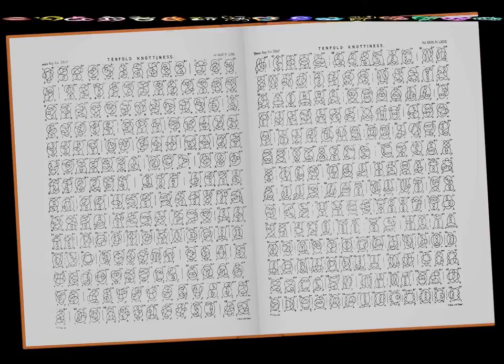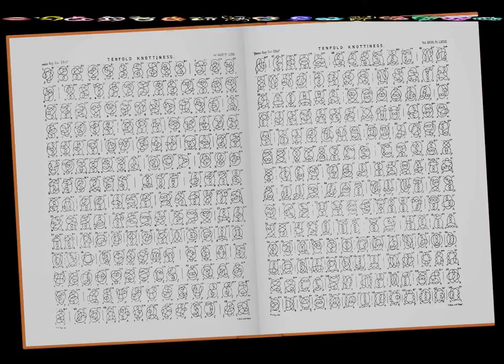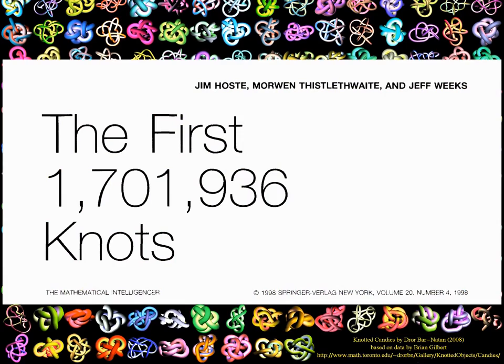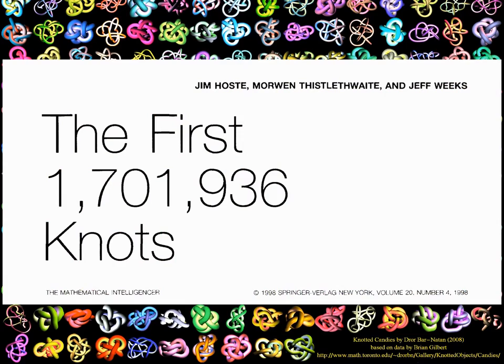Today, thanks to more sophisticated theories and computers, mathematicians compiled tables of knots which can be represented with up to 16 crossings. They are millions and provide a huge database on which to test new invariants and new theories.